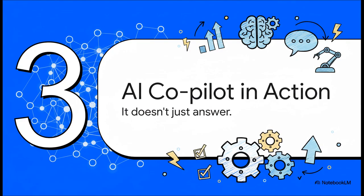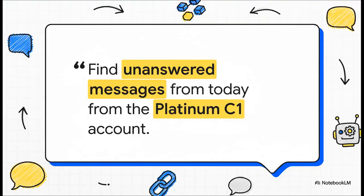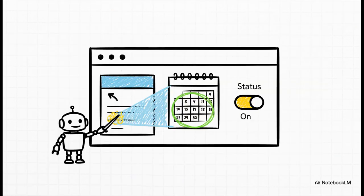So let's talk about this AI copilot, because this is where things get really interesting. What makes it different from a standard chatbot? Well, the key thing is it doesn't just tell you what to do — it actually does it for you. So picture this: you start your day and you just ask the CRM in plain English, 'Find unanswered chats from today from the Platinum C1 account.' No clicking through menus, no building some complicated search. You just ask. And instead of spitting back instructions, the Charm AI instantly takes control of the user interface for you. It sets the account filter, it changes the date to today, and it turns on the unanswered status. It just does the work. No clicks needed.